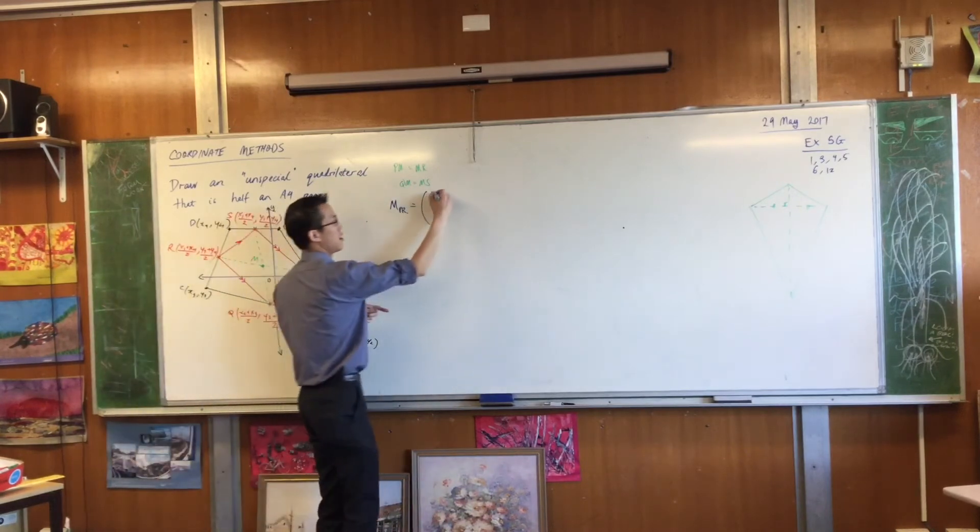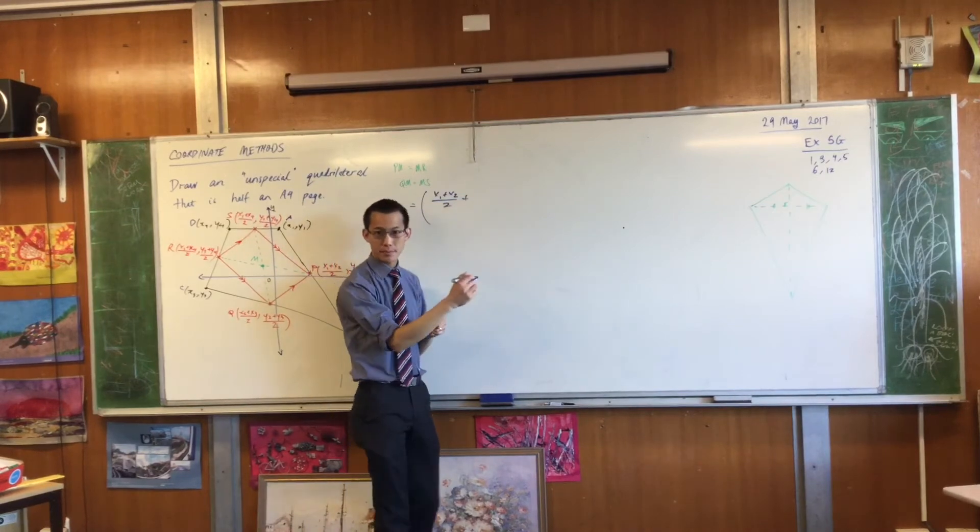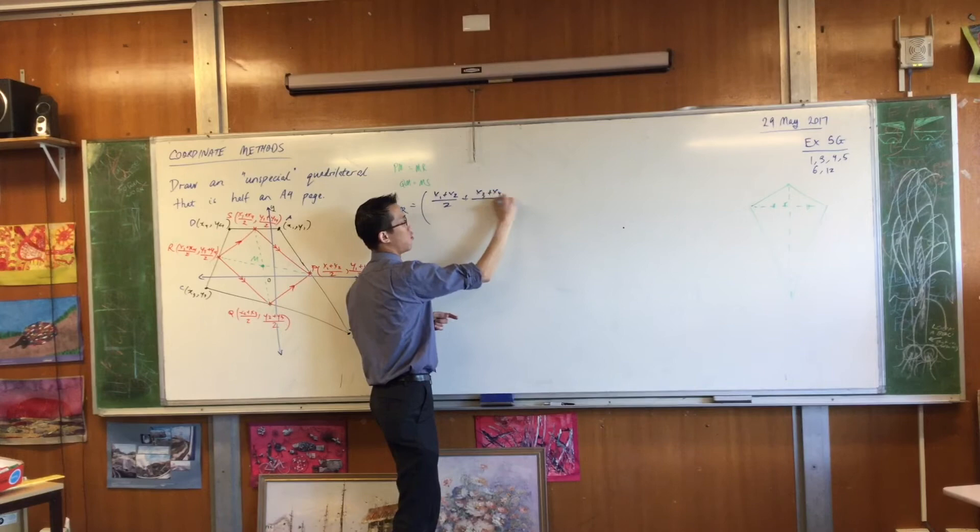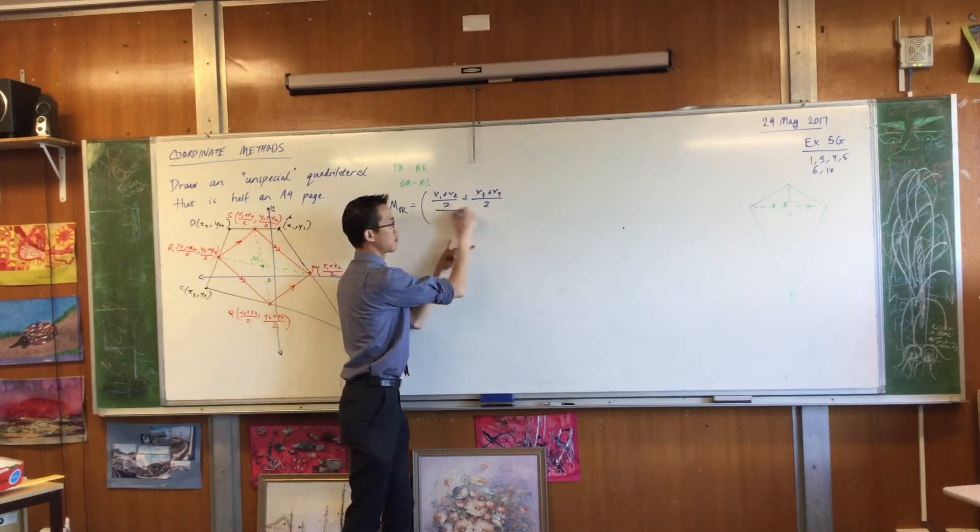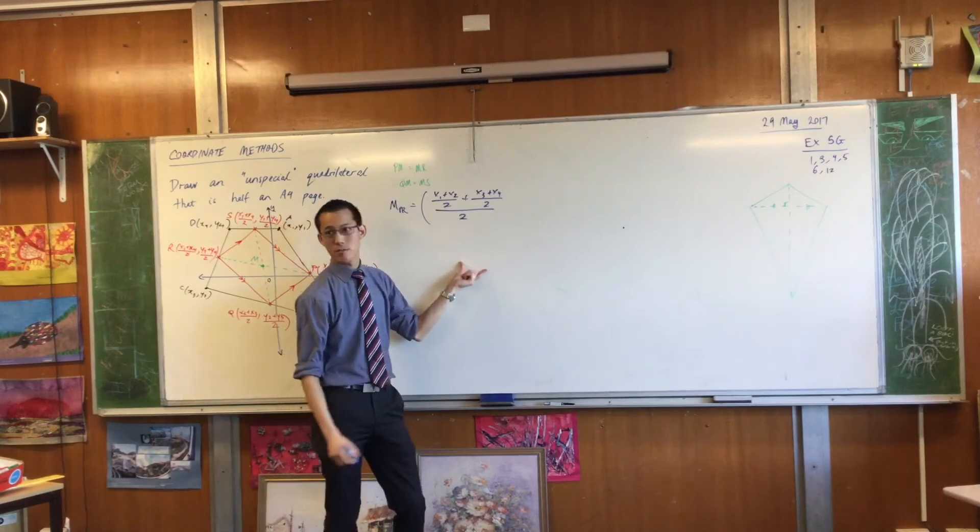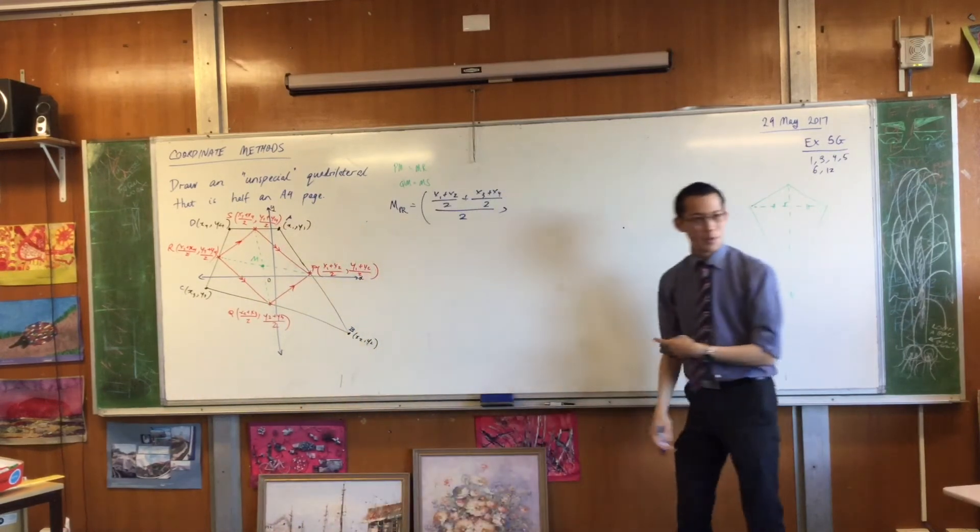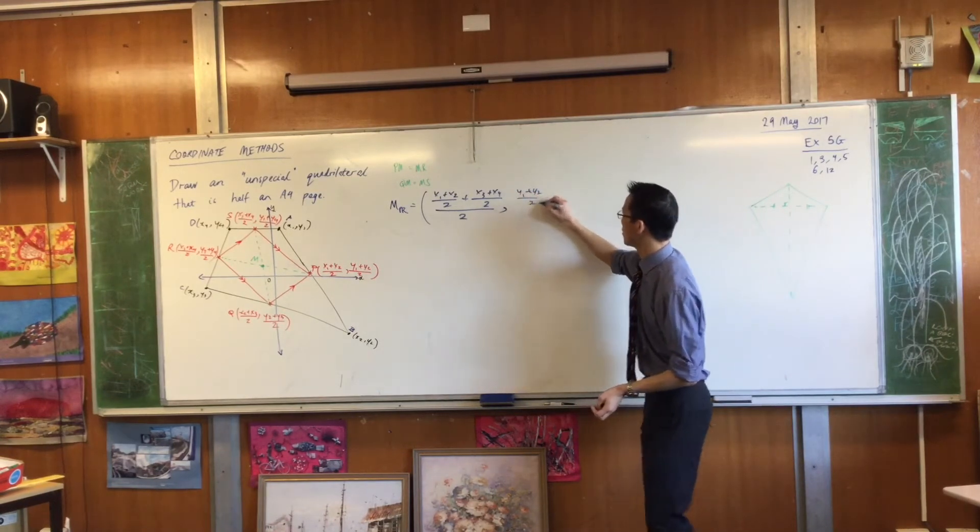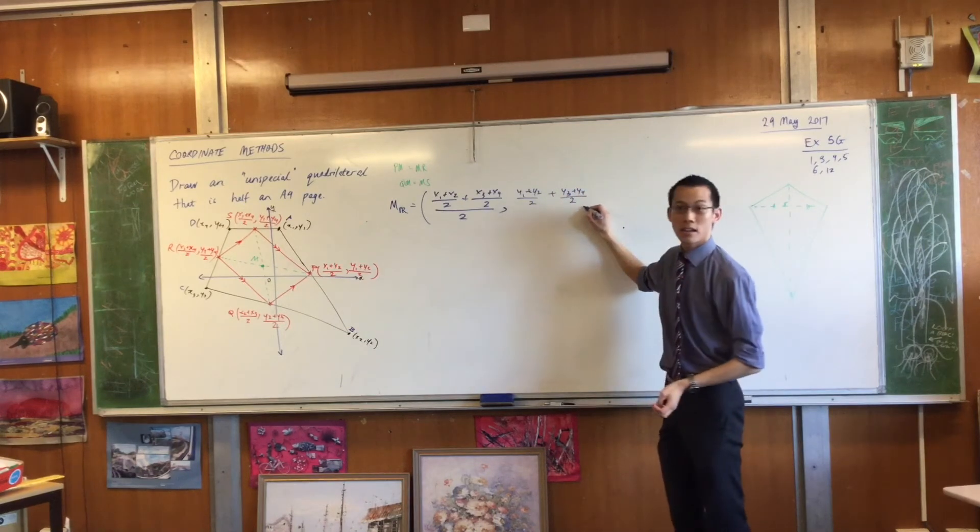It's going to be this coordinate and this coordinate. I've got to add them, right? X1 plus X2 on 2, plus what? X3 plus X4. Is that right? Also on 2. You've added them, and then you... You're right, so I've taken the average. Have a look at the Y coordinates. The Y coordinates are going to be exactly the same, aren't they? Y1 plus Y2, Y3 plus Y4.